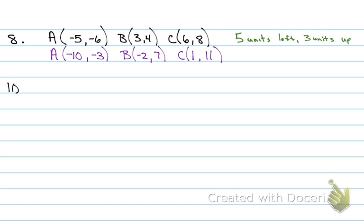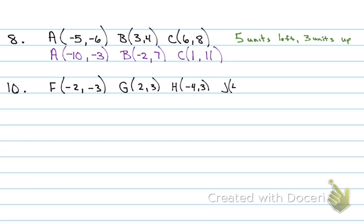Number ten is rotation. The letters on the review sheet for nine and ten don't match up — just cross out a, b, c and rewrite them as f, g, h, and add a j. The key says x,y maps to negative y, x for a 90-degree counterclockwise rotation. That means I flip x and y, and whatever my y value was, I take the opposite sign.